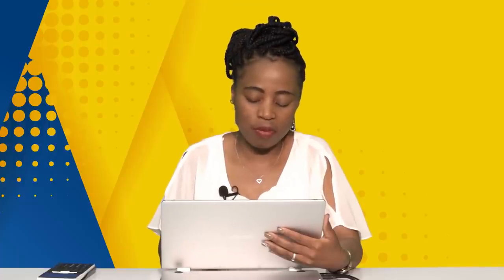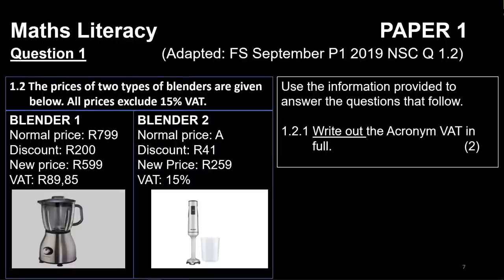Now let's get started — I hope you are ready with everything to do the calculations together. Let's look at question one. Remember, question one is supposed to have only level one questions. Here's one example: the price of two types of blenders is given below. All prices exclude VAT, and we know our VAT percentage is 15%. You have normal price and discount for both blenders. What kind of questions can they ask in this concept?